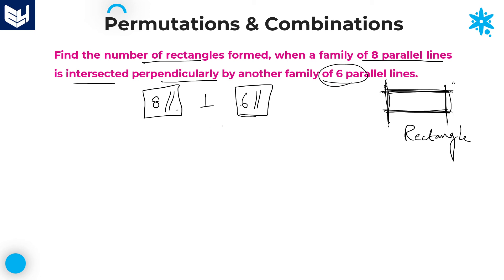We should not take all four lines from a single family, because according to the theory of a rectangle, two parallel lines must be perpendicular to another family of parallel lines. So you must select two lines from the 8 in 8C2 ways, and also select two lines from the 6 in 6C2 ways.